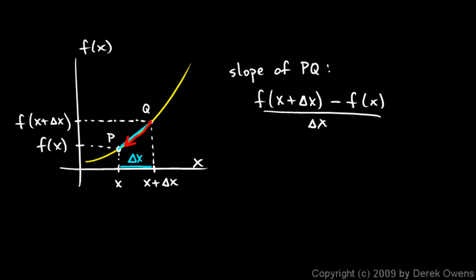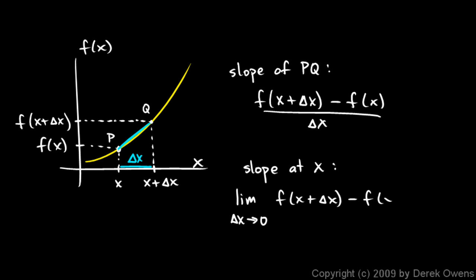That is the slope of PQ. Now we imagine point Q sliding down the curve toward point P, so delta x approaches zero. We find the slope at point P by taking the limit: the slope at x equals the limit as delta x approaches zero of f of x plus delta x minus f of x, all over delta x. That is the mathematical definition of a derivative. For a given function f of x, we evaluate this limit and we don't just get a number — we get a new function, f prime. That is the derivative of f, and that is very cool.